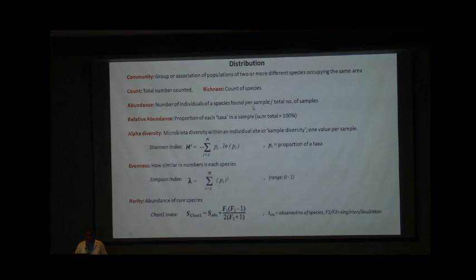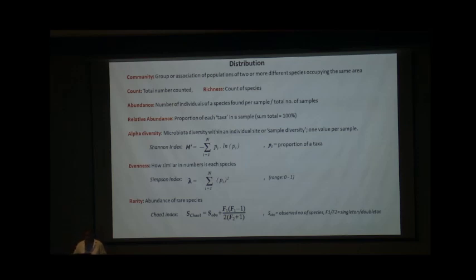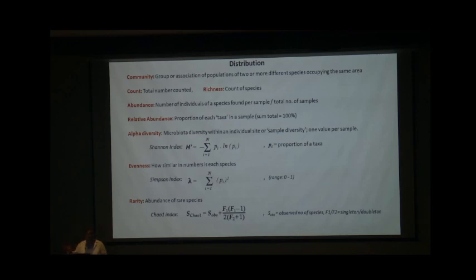'Count' is simply one, two, three, four. 'Richness' is the count of species at species level. 'Abundance' is the number of individuals of a species found per sample — for example, comparing 10 diarrheal individuals with non-diarrheal controls, looking at the abundance of E. coli in each sample separately. When you take that as a proportion out of 100, it becomes relative abundance. And the more important measure is alpha diversity, which encompasses evenness and rarity — and this applies equally to bacteria, fungi, or viruses — it's just a matter of what classification level you want to capture.